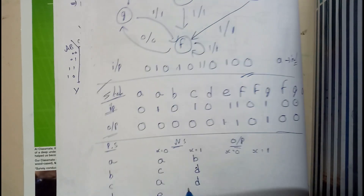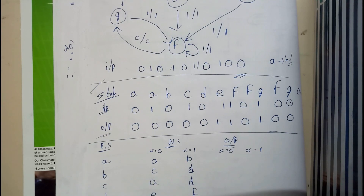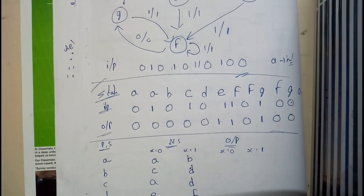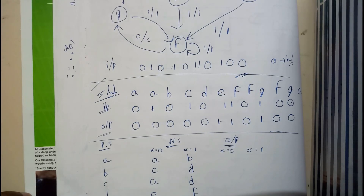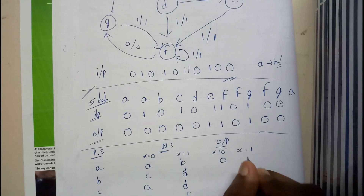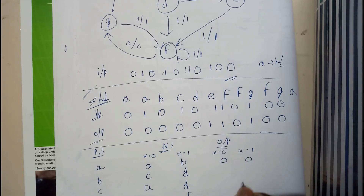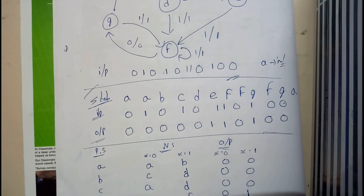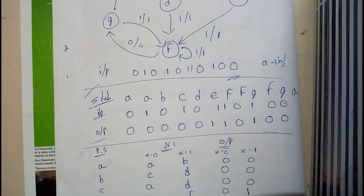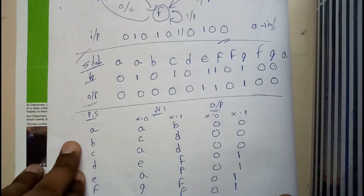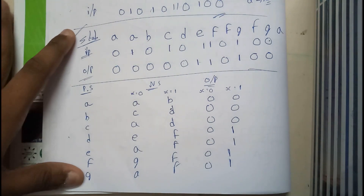Let me fill the table. Next states for input zero and input one: A→A, A→B; B→C, B→D; C→A, C→D; D→E, D→F; E→A, E→F; F→G, F→F; G→A, G→F. Outputs: zero, zero, zero, zero, zero, one, zero, one, zero, one, zero, one.